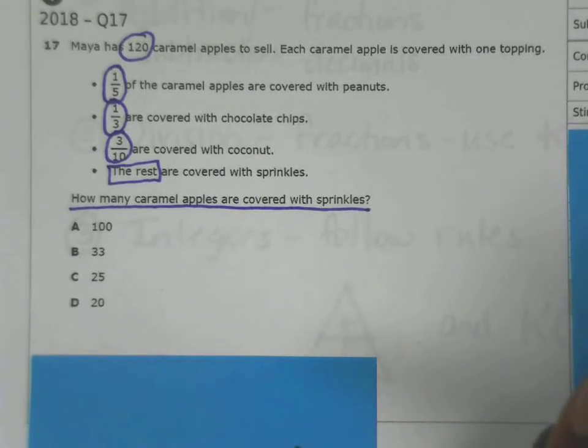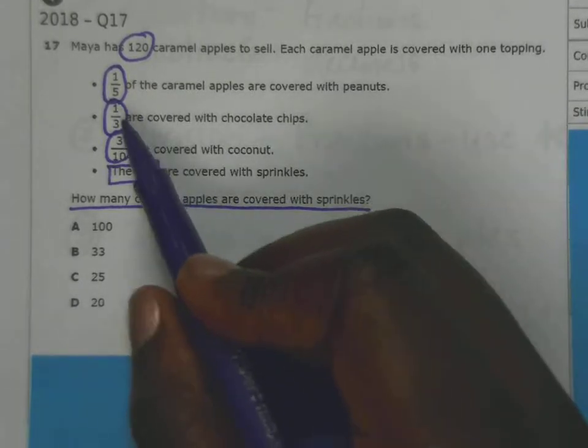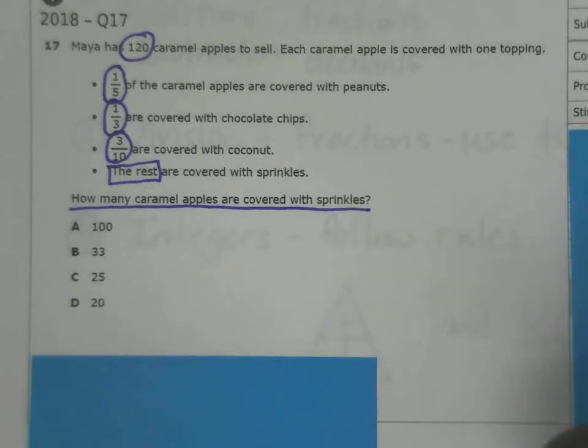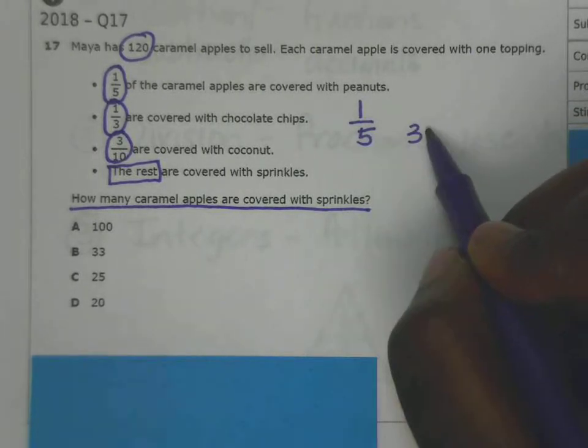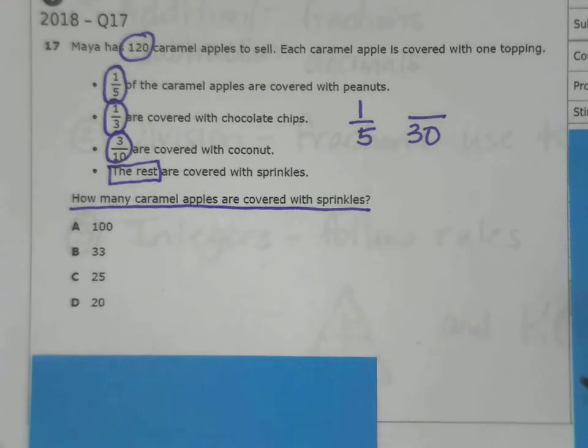We have three fractions with different denominators. We can either change them to common denominators or convert to decimals - it depends on what you prefer. I'm a fraction person, so I'm going to use fractions, and I think that's what we need the most practice with. A good common denominator for this would be 30.